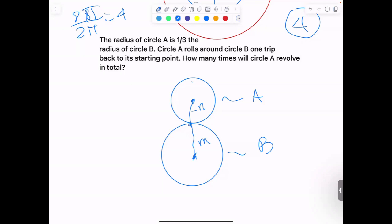Now this is simple because we're going to rotate this. The circumference of the top circle is going to be 2πN.